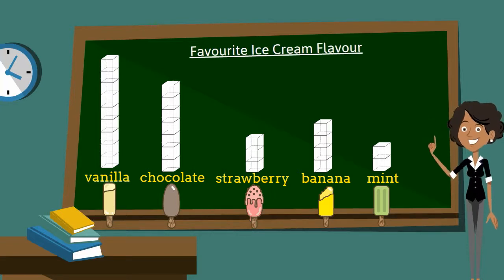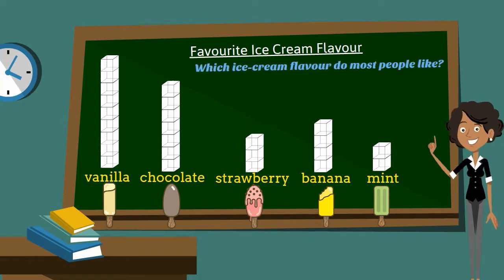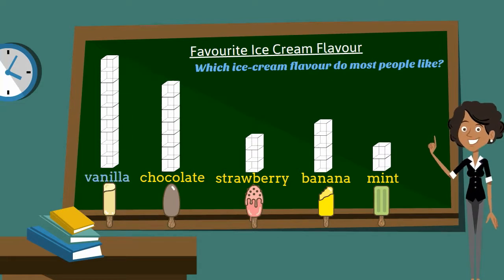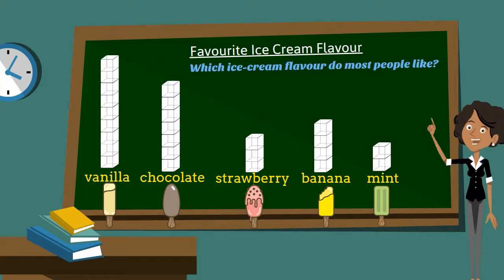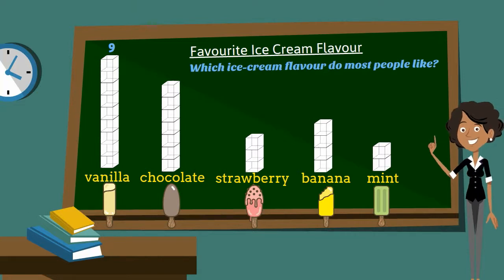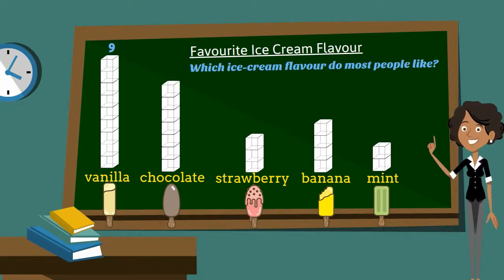The first question is: which ice cream flavor do most people like in my class? I think it's vanilla. Vanilla has the most cubes — let's count: one, two, three, four, five, six, seven, eight, nine. Nine out of 25 people in my class chose vanilla as their favorite ice cream flavor.